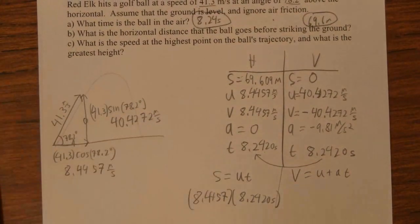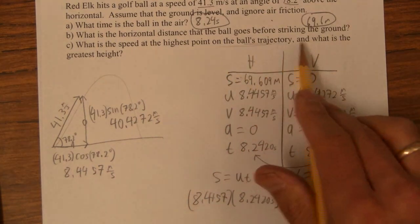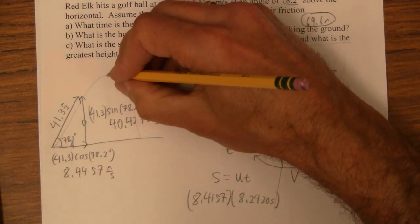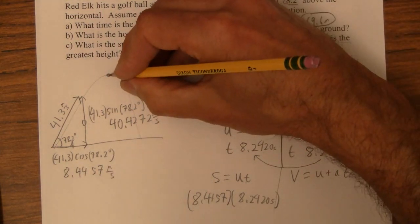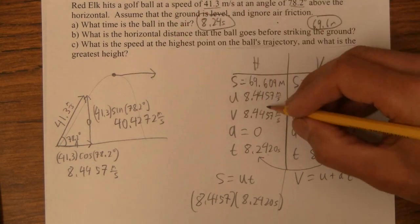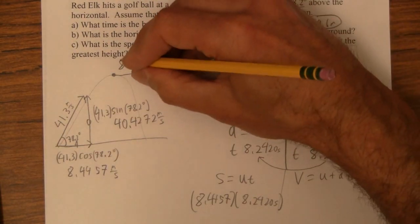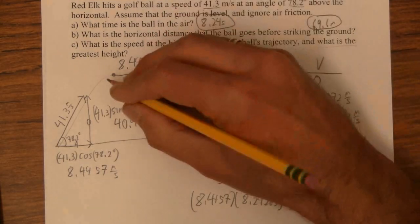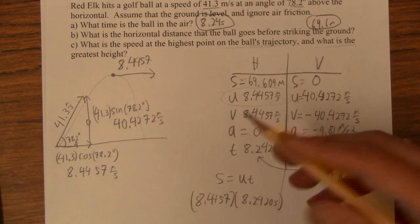And then the final question here is sort of tricky. It says, what's the speed at the highest point on the ball's trajectory and what is the greatest height? Well, at the highest point, the vertical velocity is zero, so it has only a horizontal velocity. So the speed at the highest point is this guy, it's just our 8.4457. At the highest point, it's moving purely horizontally, and the horizontal velocity is always that.